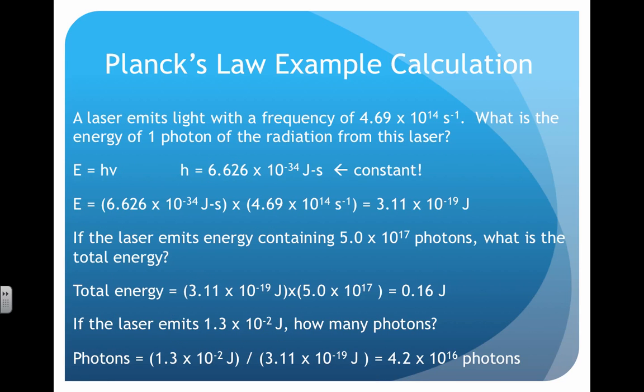How would we do calculations involving Planck's Law and Planck's equation? Here are a couple examples. Let's say we had a laser that emitted light with a frequency that's given here. What is the energy of one photon from this laser? That's what E equals hν allows us to do. When we plug in these numbers, we'll get the energy of one photon. H is constant, so we already have that, and the frequency was given in the problem. So the frequency of one photon of this laser carries this amount of energy: 3.11 times 10 to the negative 19.